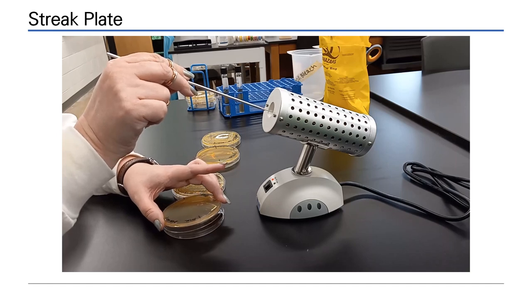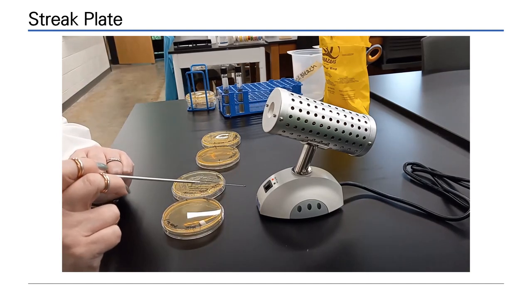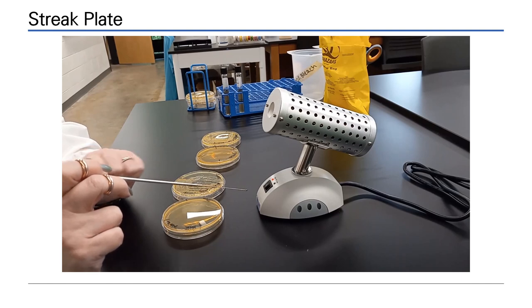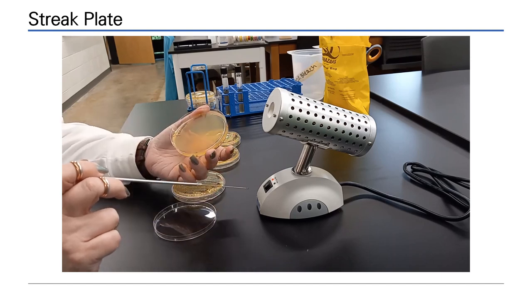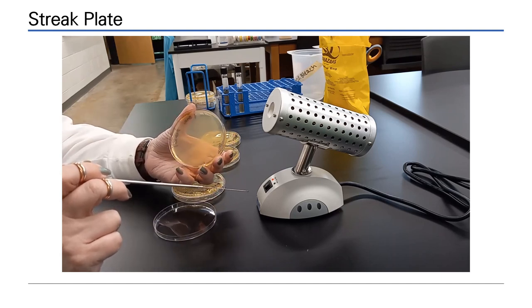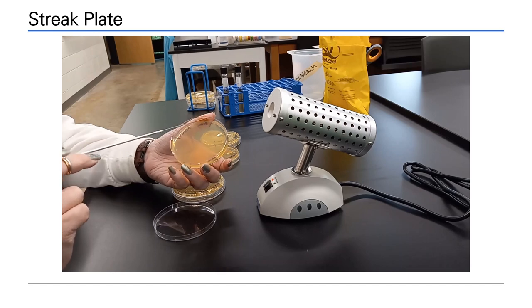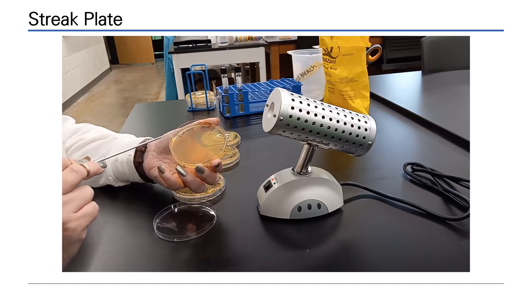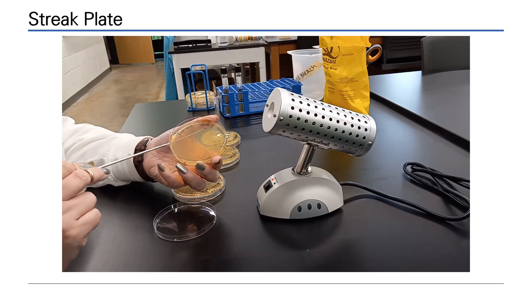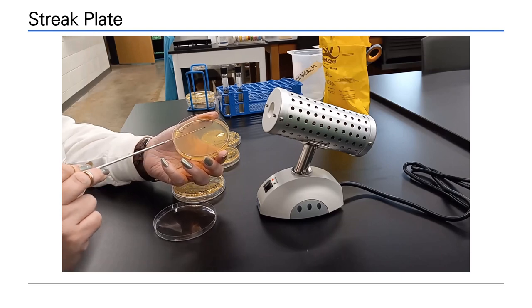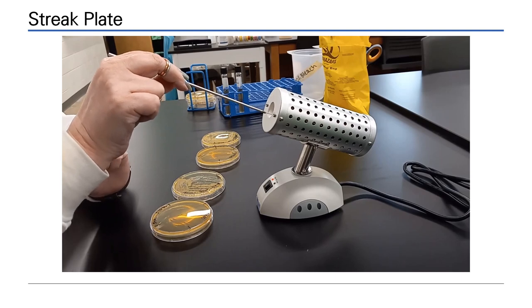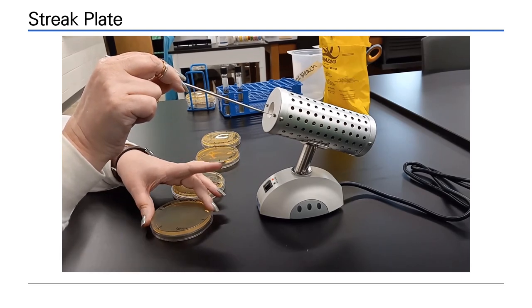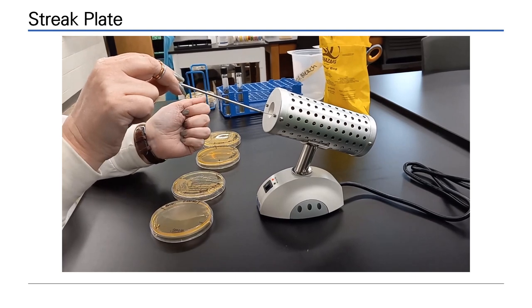Re-sterilize and kill all of the cells on the loop. This adds to the dilution effect. Fewer cells will be picked up from the first quadrant and moved into the second. The plate is rocked in the light so that you can observe where your streak ended. Enter the streak twice and drag across. Then do not enter the streak and drag across into the next quadrant. This also causes dilution.